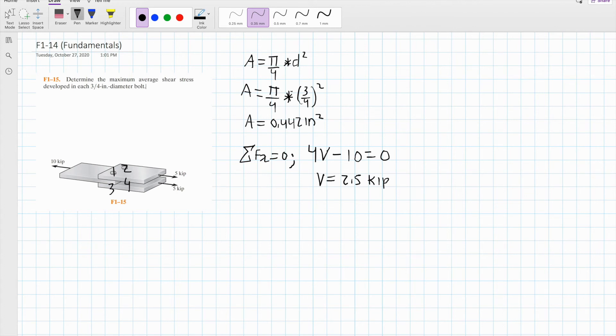Now we're ready to substitute these values into the equation. We have the area and the shear force. The equation for average shear stress is tau equals V divided by the cross sectional area. So we have 2.5 kip divided by its cross sectional area, 0.442 inches squared. We enter this in the calculator and we get 5.66 ksi.